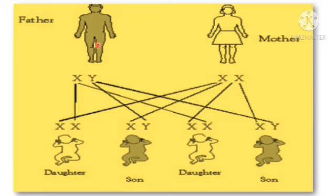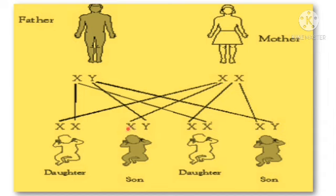Here is a schematic representation. The father carries X and Y; the mother carries X and X. So we have four possibilities. We may get a daughter if the X chromosome of the father fuses with the X chromosome of the mother, resulting in double X — so it is a daughter. If the Y chromosome of the father fuses with the X chromosome of the mother, we get XY — a male child.